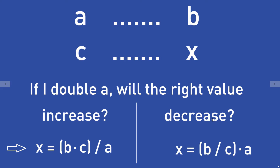If the answer is increase — so if I double value A and the right value increases — then the unknown value X is given by this formula: you have to multiply B and C, so B times C, and then divide the result by A. So X = (B × C) / A.